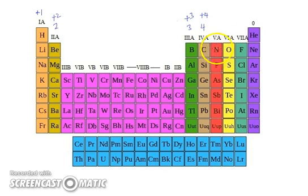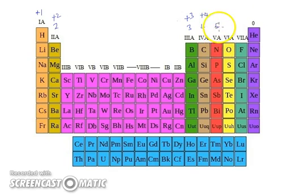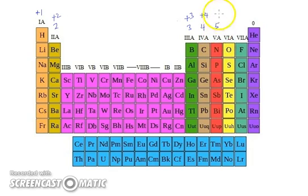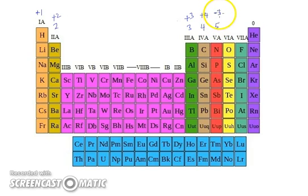Now we look at the fifth group. Elements in the fifth group have five valence electrons, and five is much closer to eight, meaning if they gain three more electrons they can complete their octet. Since these elements have a tendency to gain electrons, they show a negative charge. They need three more electrons, so they show a minus three charge — nitrogen has minus three charge and phosphorus has minus three charge.